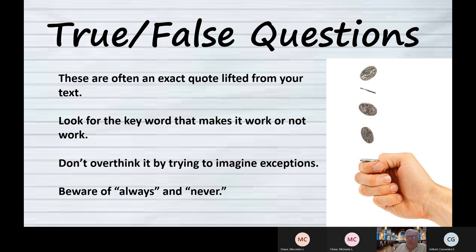So if you can find the key word that ruins the definition or ruins the quote, then you can mark false. But here's the trick: students overthink it by trying to imagine some exception. Like, water weighs 8.8 pounds per gallon, but that's fresh water at sea level. So in New Orleans, which is below sea level, it would weigh more. Or in Denver, which is a mile high, it would weigh less. So water doesn't always weigh 8.8 pounds per gallon.